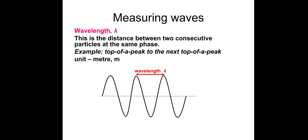Wavelength is the distance between two consecutive particles at the same phase — so from the top of a peak to the next peak. Or from one point down, up, and back to where it started — that's also a wavelength. We could also go from trough to trough. One full wave, essentially, is the wavelength — the length of wave.